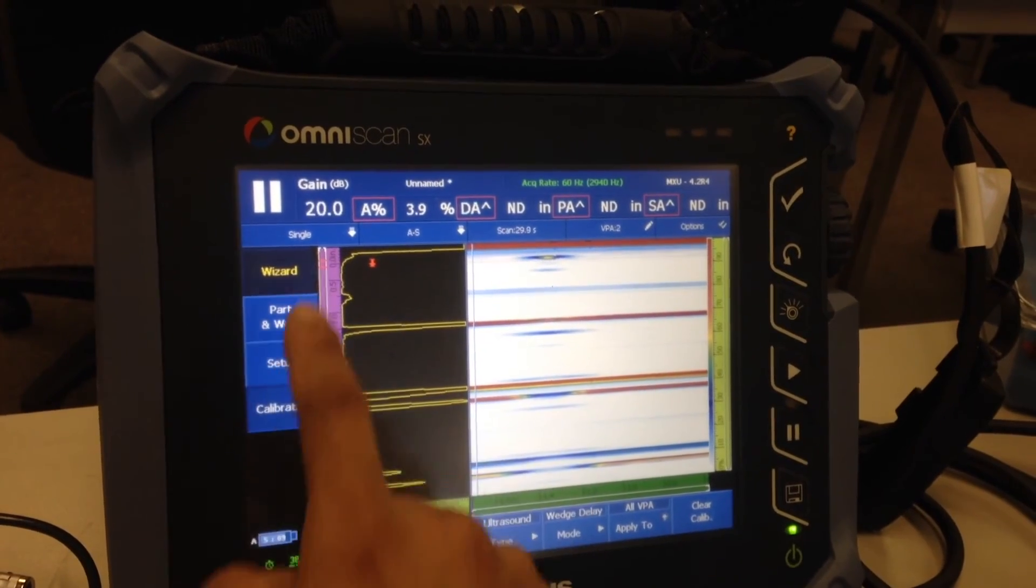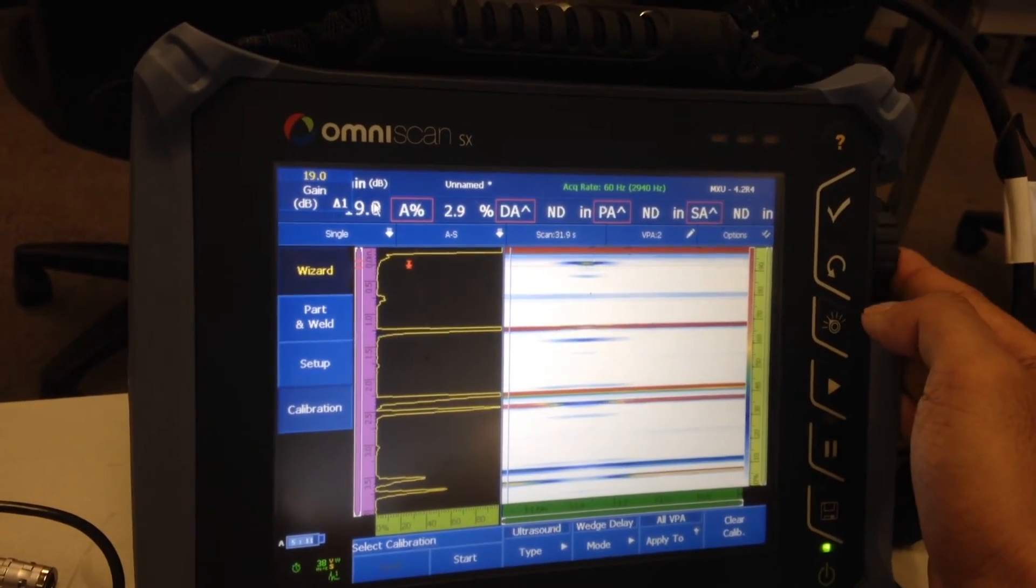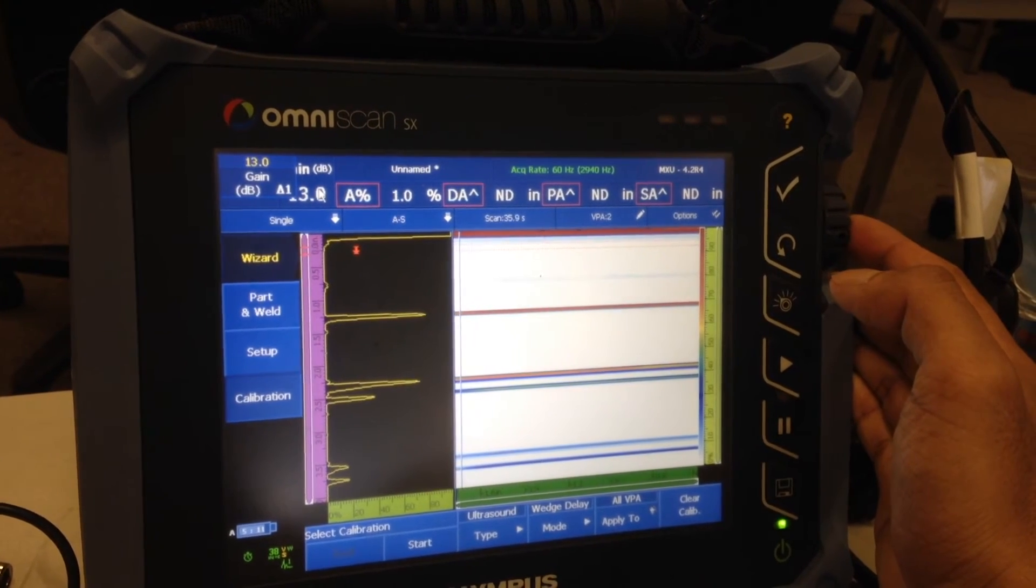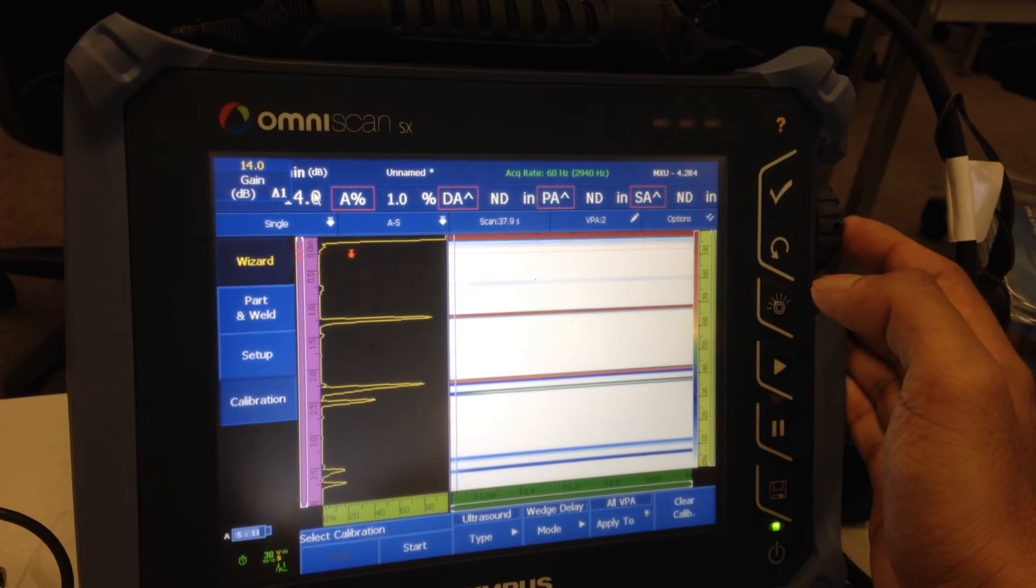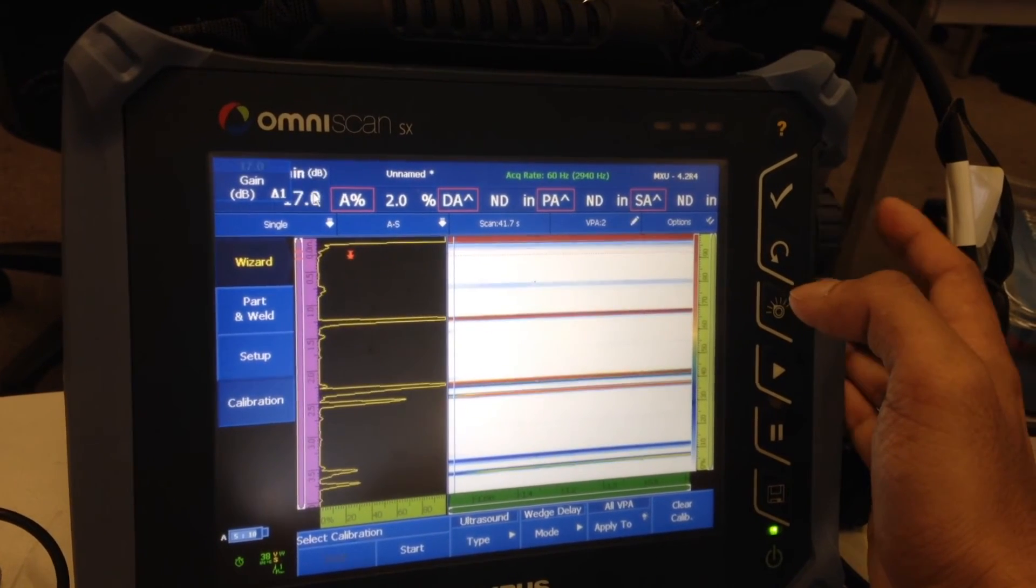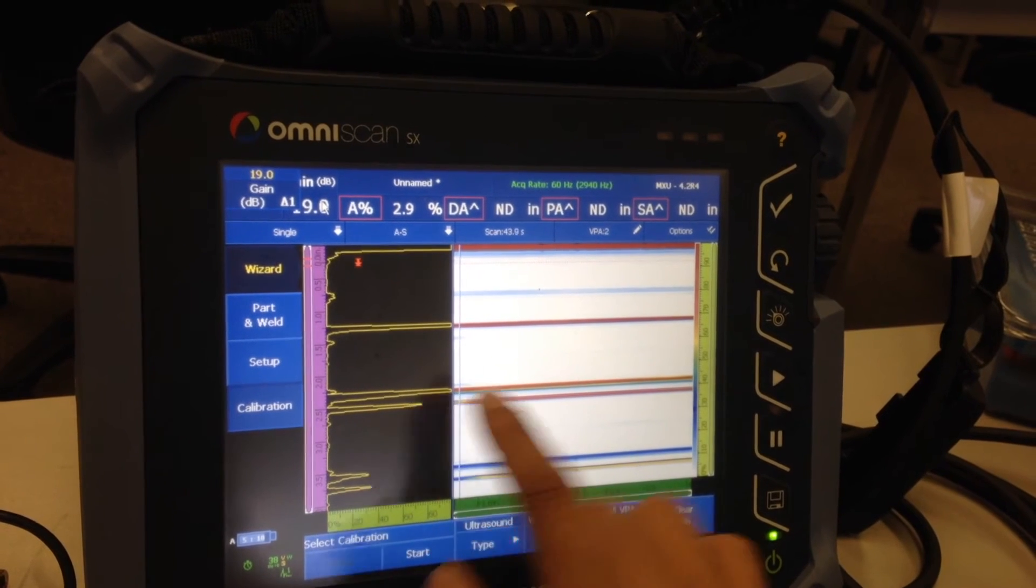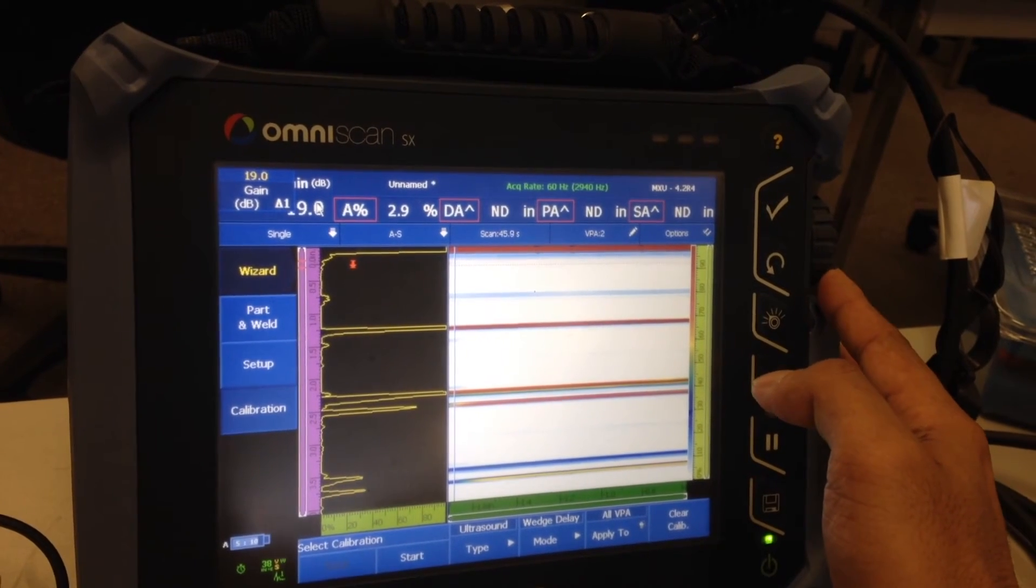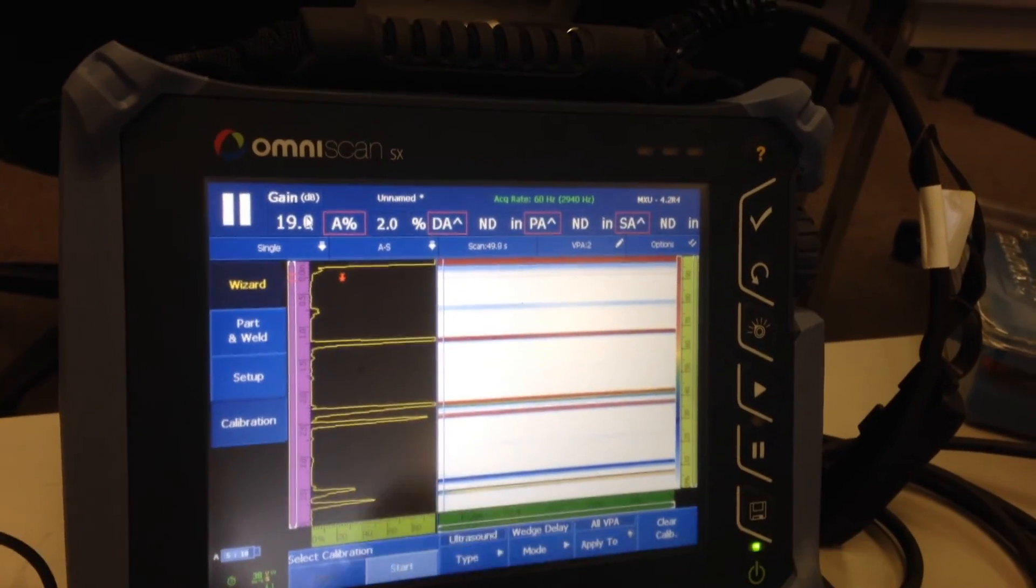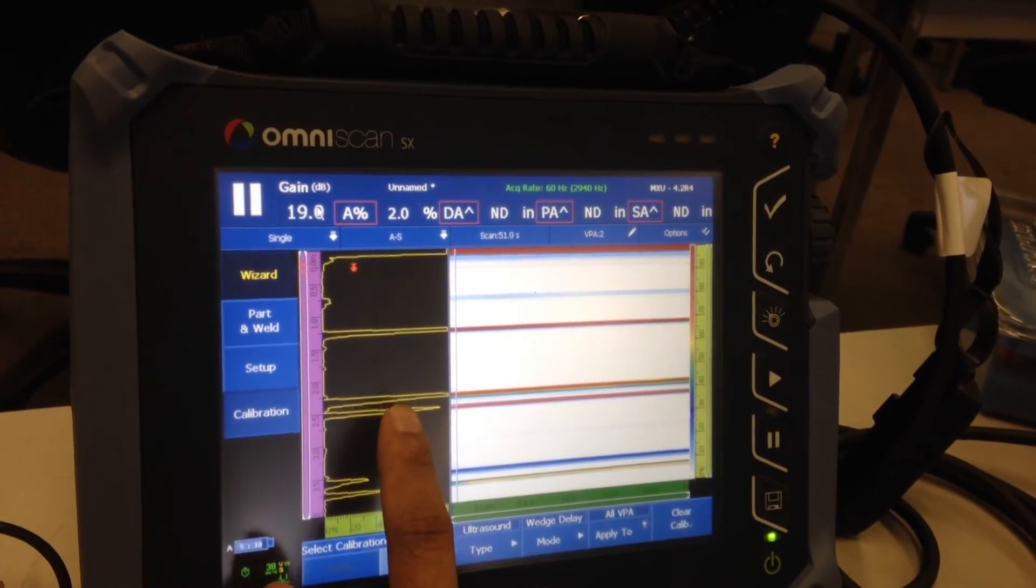Right now the signal is above the screen, so I'm going to reduce my gain. So I set my second back wall signal to about 80% screen height, right there.